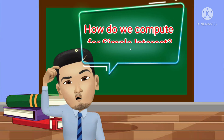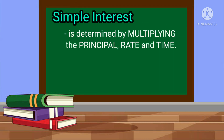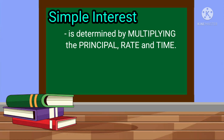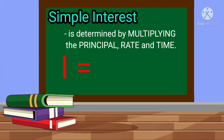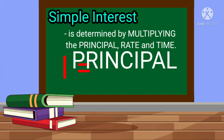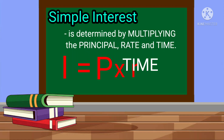How do we compute for the simple interest? As mentioned, simple interest is determined by multiplying the principal, rate, and time. So the formula for the simple interest is: I = P × R × T.